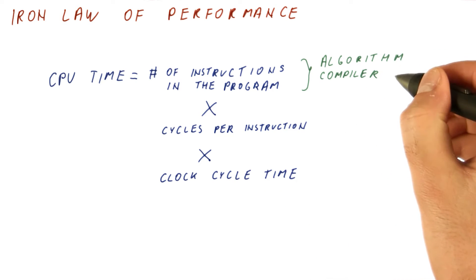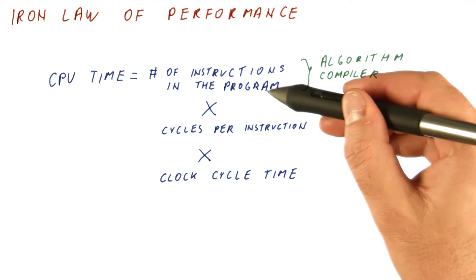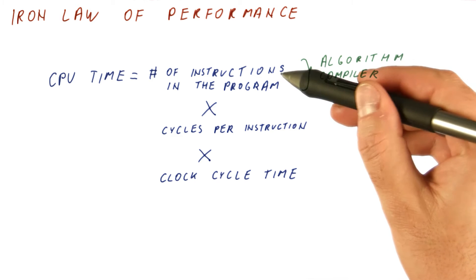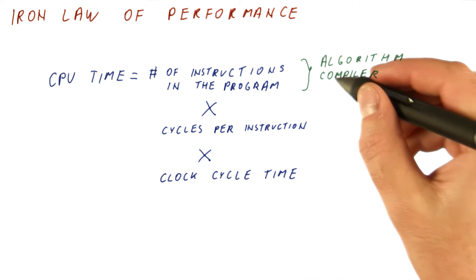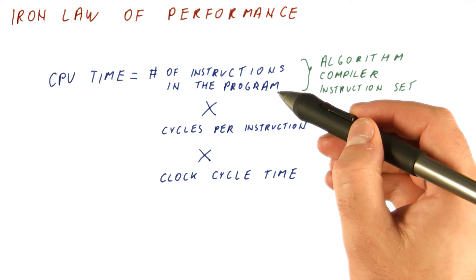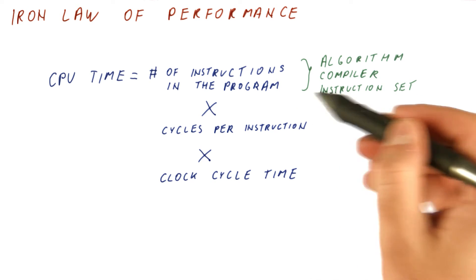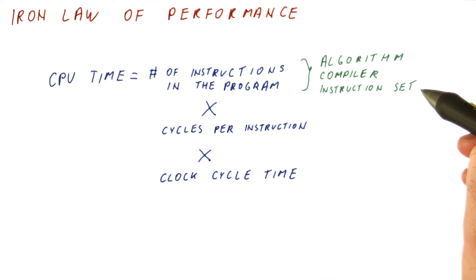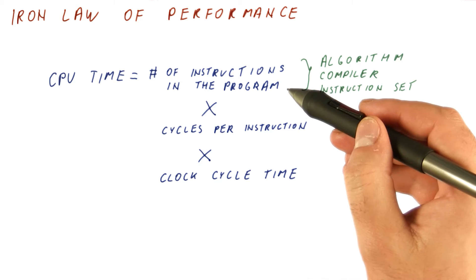So the number of instructions per program is generally affected by the algorithm we use and by the compiler we use. If we have a better compiler, it might result in a more efficient program that needs fewer instructions to do the same thing. And also, our instruction set might affect how many instructions we need to execute in a program. For example, if we have very simple instructions, it might take more of them to execute the same thing.